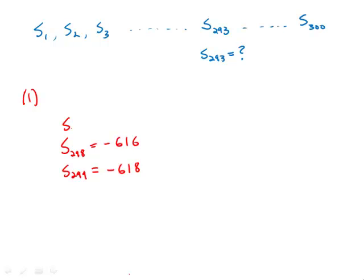If we go backwards again, negative 612, and we could work our way back to the 293rd term.